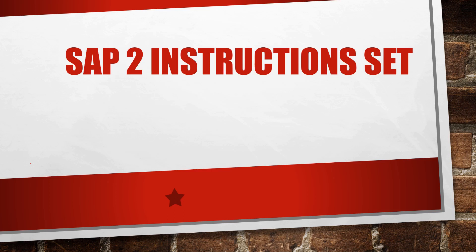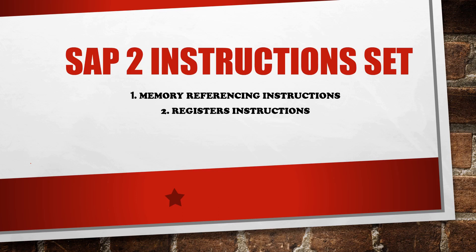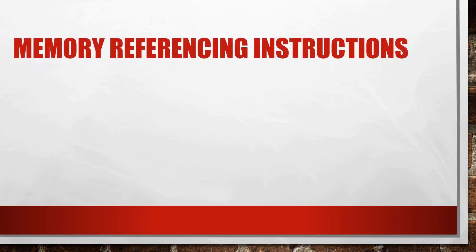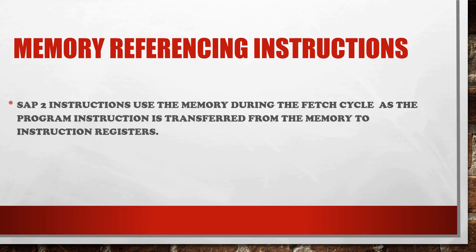They are classified into five types: memory referencing instructions, register instructions, jump and call instructions, logic instructions, and other instructions. We will discuss this instruction set one by one with proper examples. Now let's discuss about the memory referencing instructions of the SAP2 in detail.